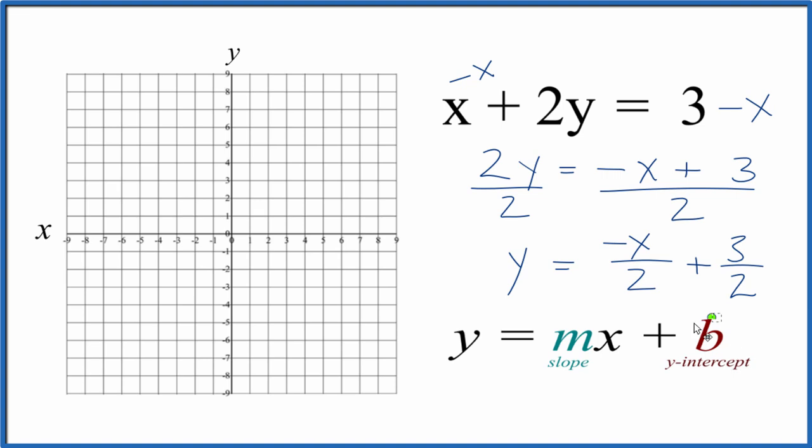So our y-intercept, that's at 3 over 2. That's equal to 1 and a half. So we go to the y-axis, we go to 1 and a half, and that's the y-intercept. That's where we'll cross the y-axis.